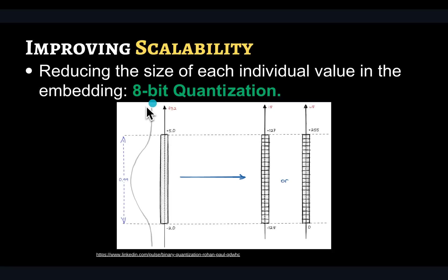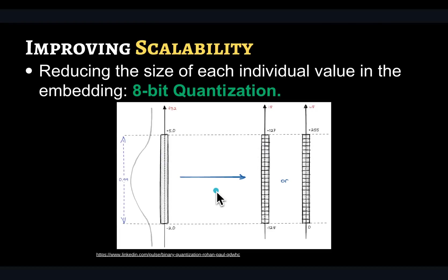Instead of going to the extreme case of using a single bit, you can also use 8-bit or 4-bit quantization. You take the original values and represent them by 256 different levels, picking one of those levels depending on the value of your original input. This approach is very similar to the quantization we see in large language models, where we quantize the weights to either 4-bit, 2-bit, or 8-bit.